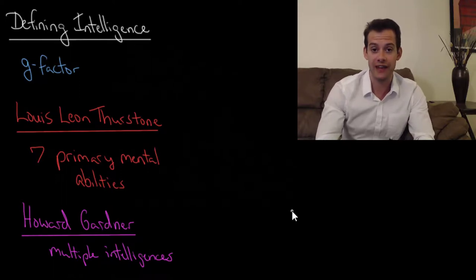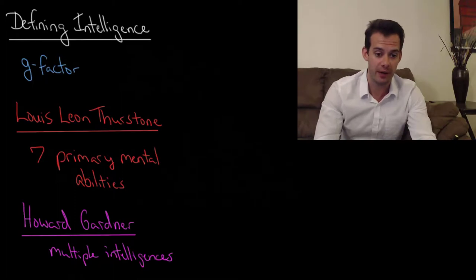In the previous video I introduced the idea of G-factor. This came from research by Charles Spearman. What Spearman did was use factor analysis to look at the correlations between people's performance on a broad range of tasks, and he found that these correlations could be explained by a single factor. This is what he called G-factor, which stood for general intelligence.